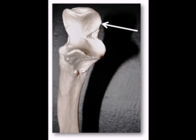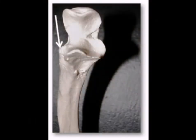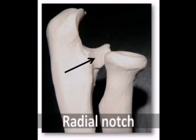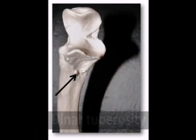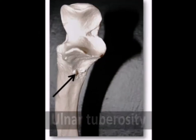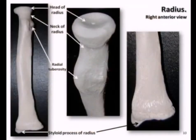The trochlear notch is named after the trochlea of the humerus, the tooth-like process with which it articulates. Located just lateral and below the trochlear notch is the radial notch, which articulates with the head of the radius. There is also a rough bumpy area called the ulnar tuberosity, located inferior to the coronoid process, which serves as an attachment point for the tendons of the biceps brachii muscle. Now let's examine the bony landmarks of the radius.